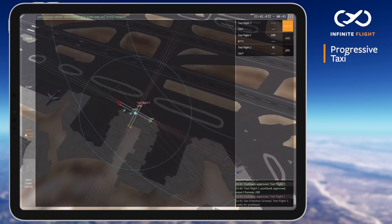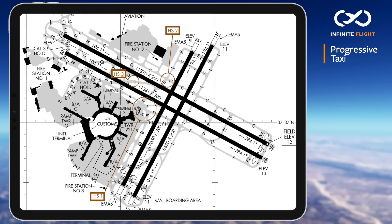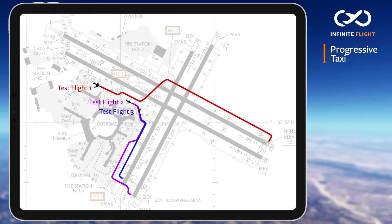Let's head upstairs and plug into ground. In this scenario, we have three aircraft. Test flight 2 and 3, both CRJs, will be going to runways 1 left and 1 right. Test flight 1, a heavy Boeing 777, will be departing runway 28R.